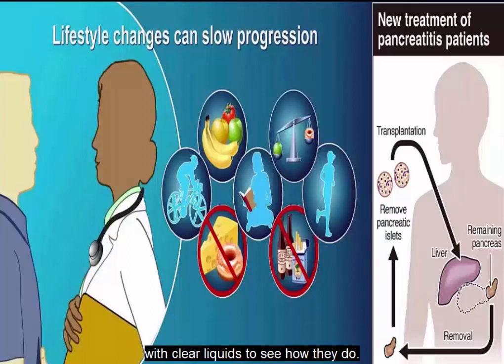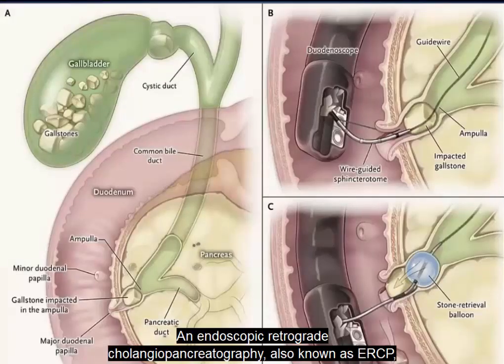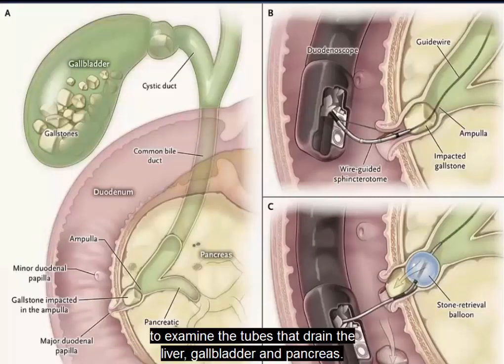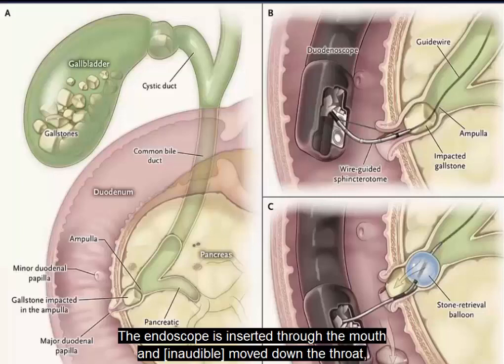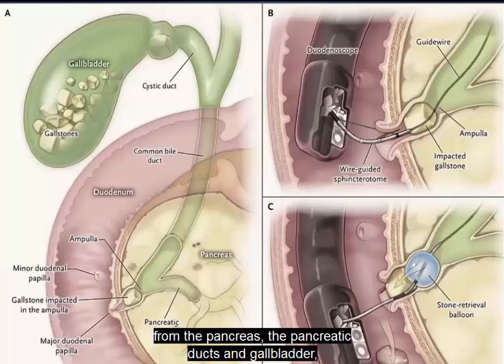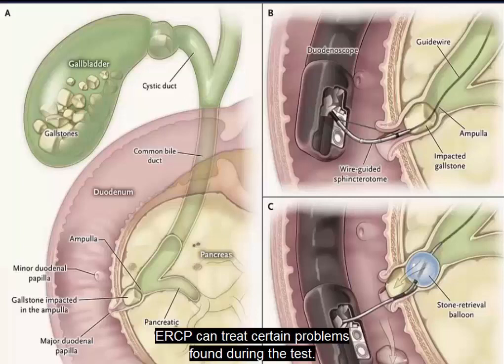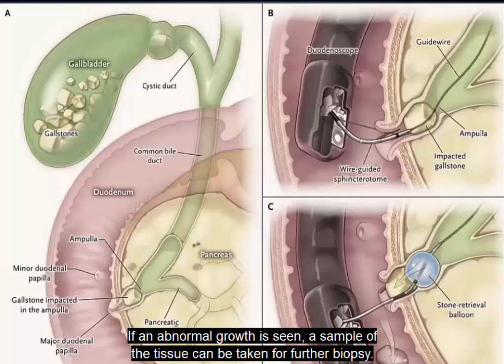An endoscopic retrograde cholangiopancreatography, also known as ERCP, is a test that combines the use of a flexible lighted scope with X-ray pictures to examine the tubes that drain the liver, gallbladder, and pancreas. The endoscope is inserted through the mouth and moved down the throat into the esophagus, stomach, and duodenum until it reaches the point where the pancreatic ducts and bile ducts drain into the duodenum. ERCP can treat certain problems found during the test, and if an abnormal growth is seen, a sample of tissue can be taken for further biopsy.